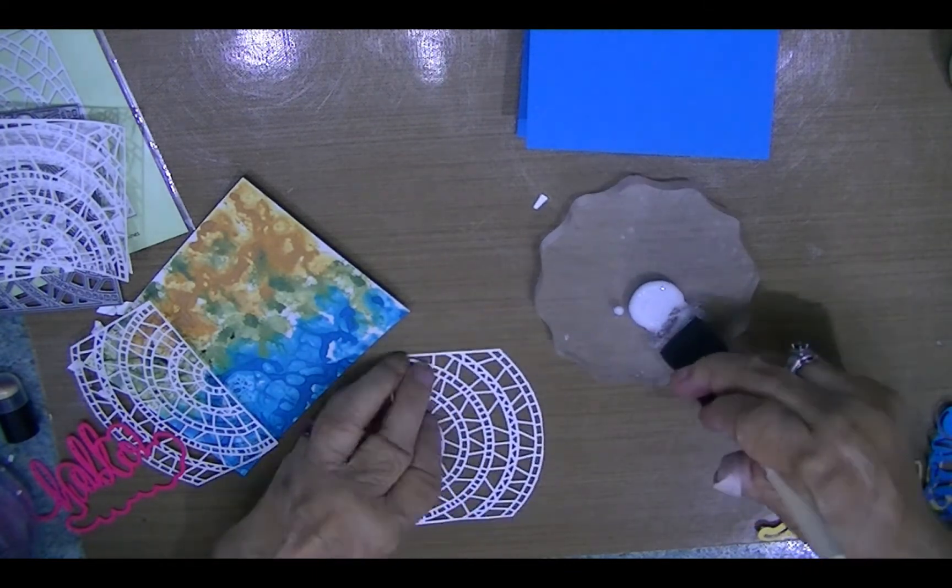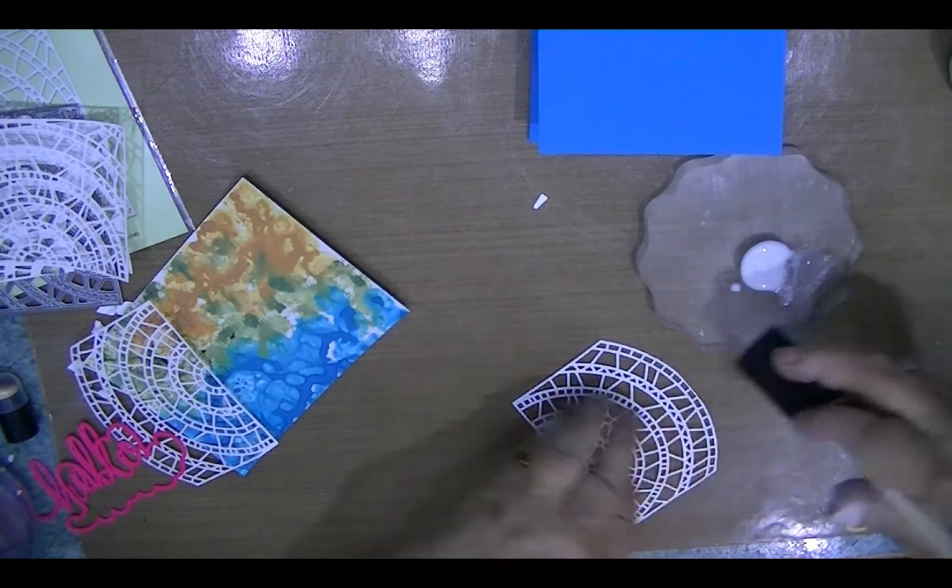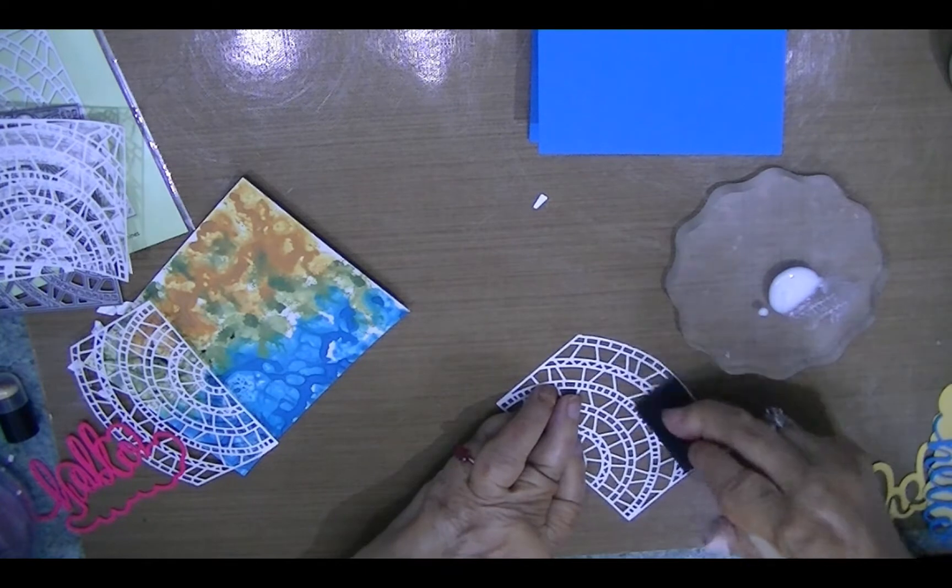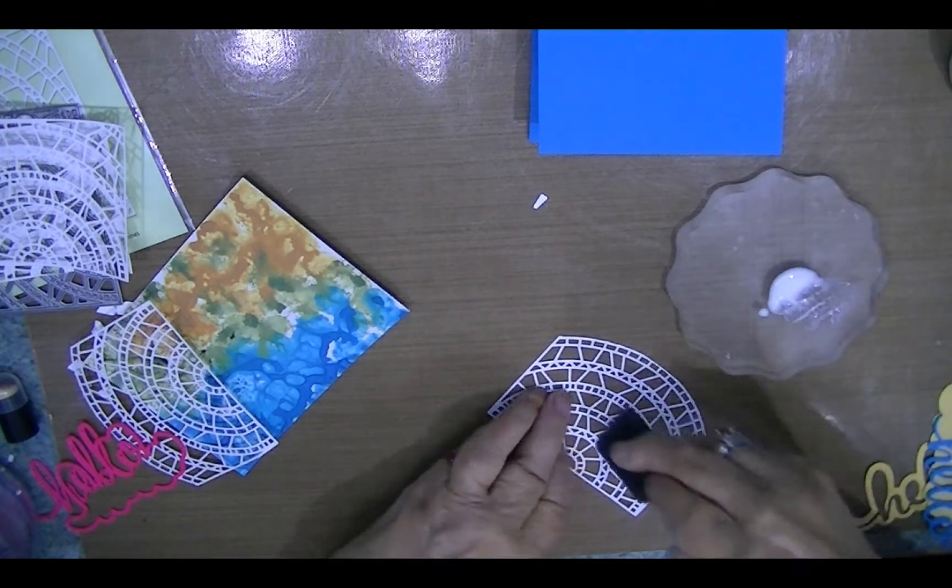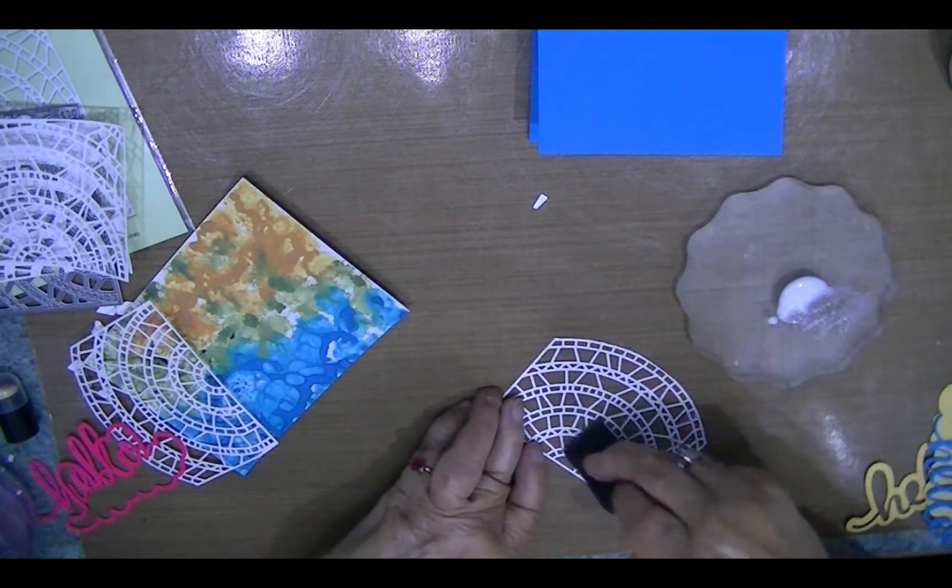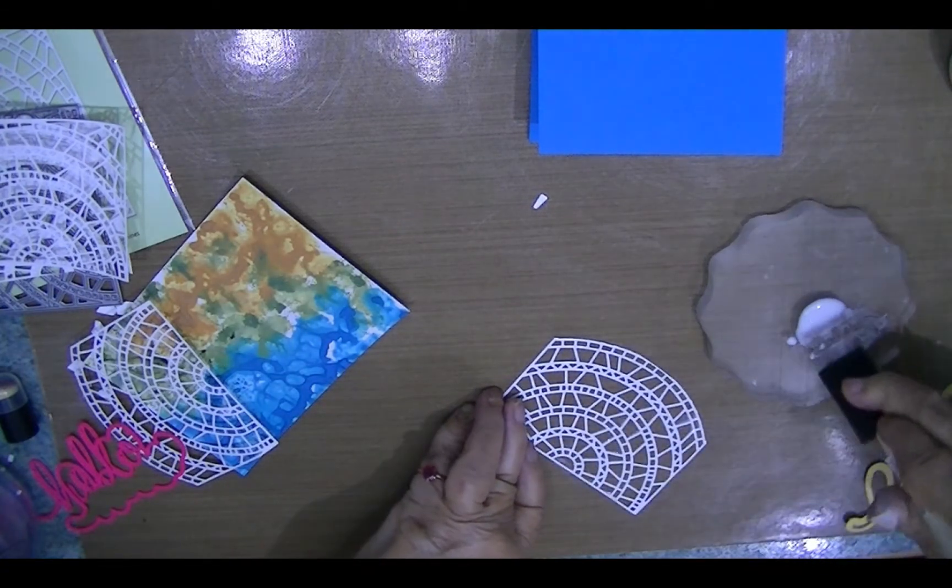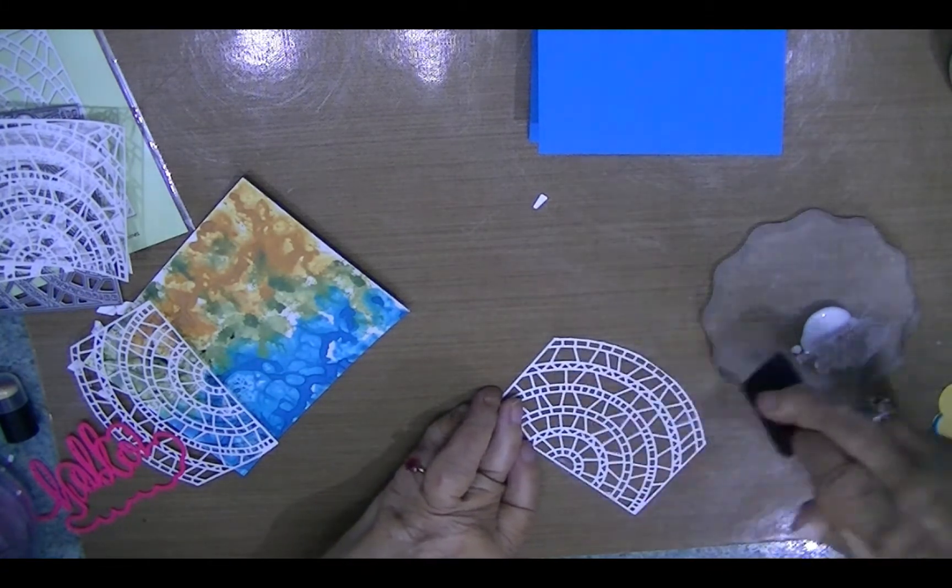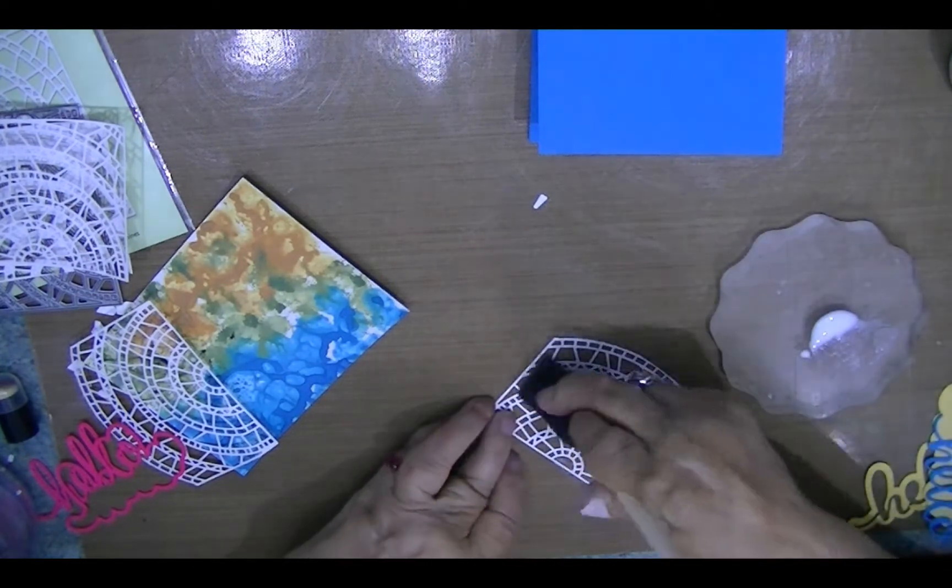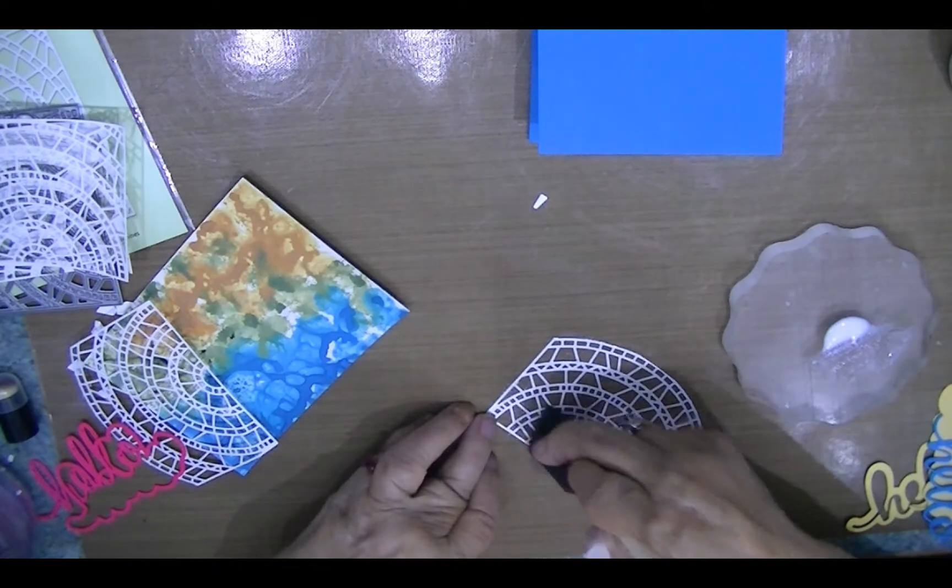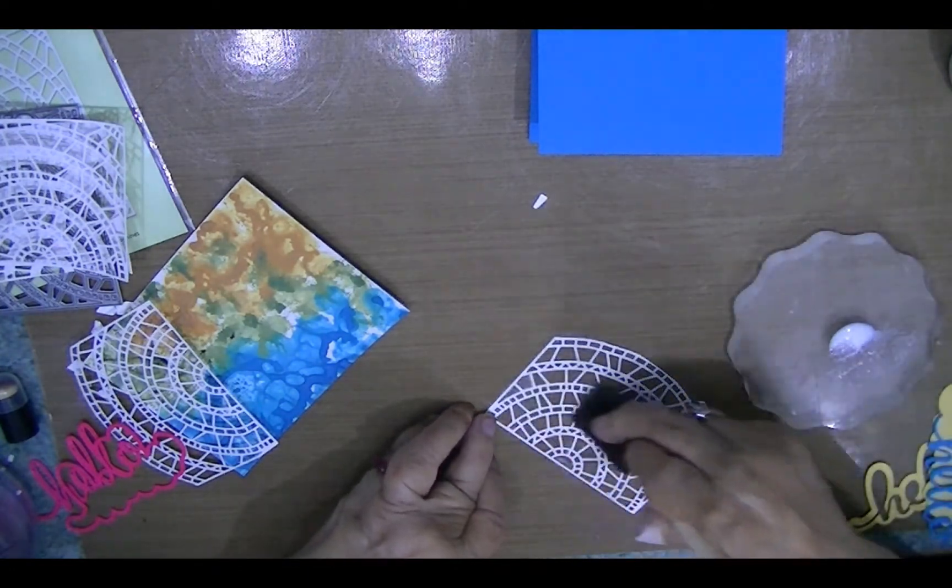So I'm just taking a little sponge brush. I'm going to try and get over here and I'm going to make a mess. I'm going to put a little glue on it. For an intricate die, this is the fastest way for me to get glue on it.